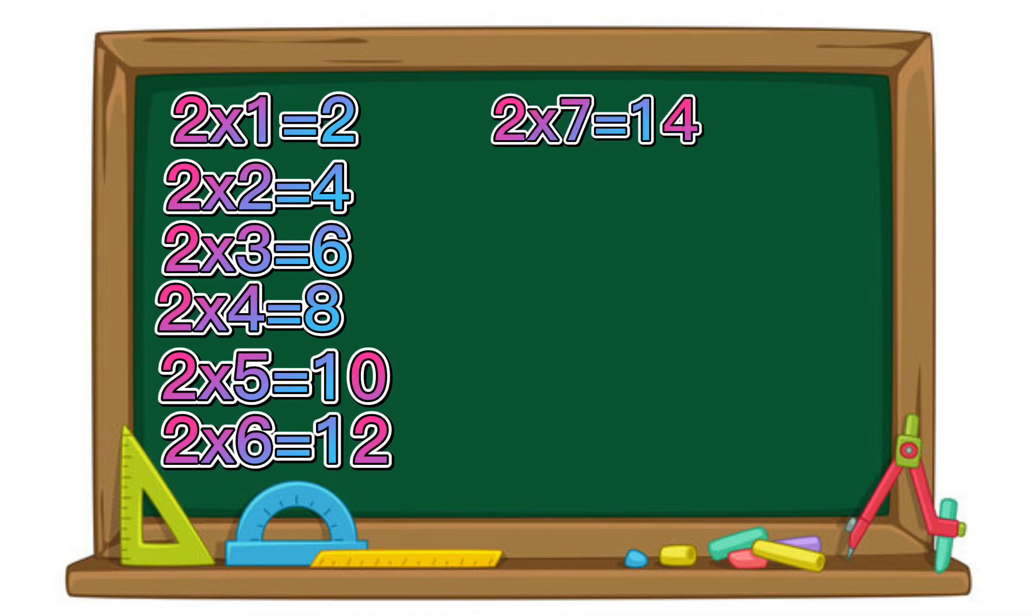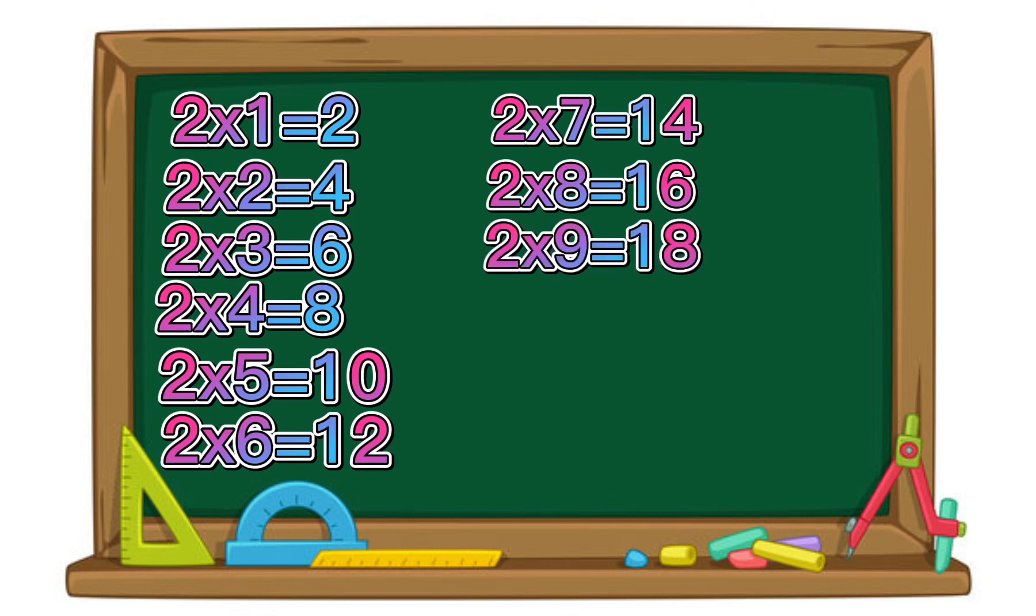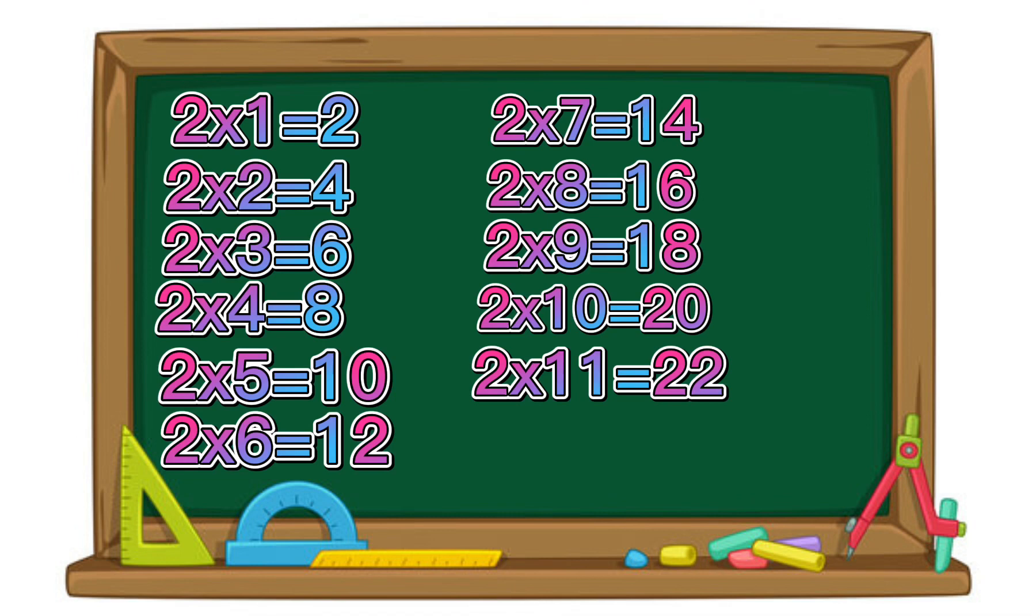2 times 7 equals 14. 2 times 8 equals 16. 2 times 9 equals 18. 2 times 10 equals 20. 2 times 11 equals 22. 2 times 12 equals 24.